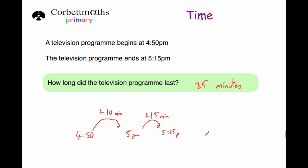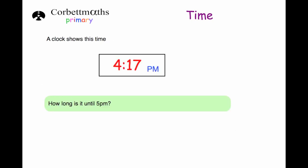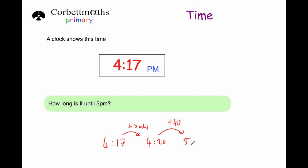Our next question says a clock shows the time 4:17. How long is it until 5 p.m.? If we add three minutes, that will bring us to 4:20. And then if we add another 40 minutes, that will bring us to 5 p.m. So altogether that is 43 minutes.